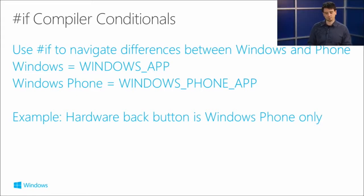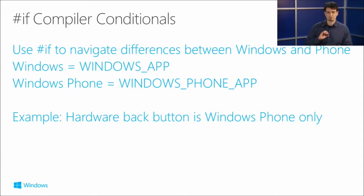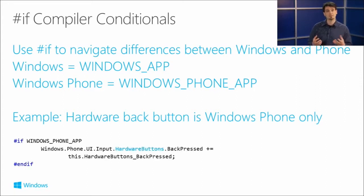A great example of where you'd use compiler conditionals is the hardware back button, which is Windows Phone only. If you need to hook into that hardware back button — maybe preload some data for the last screen — you'll have to wrap that inside an #if compiler conditional. That's where you put your back button event handler so you're not breaking your Windows application.